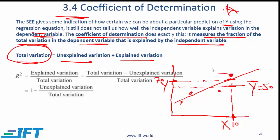So the total variation is this distance. It's the distance between the actual value of y and the average value of y. Now that total variation has two components.